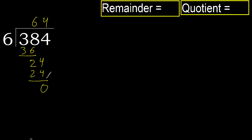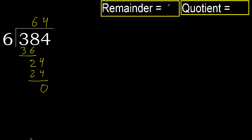Next, there is no more number, therefore finish it. 384 divided by 6 is 64.